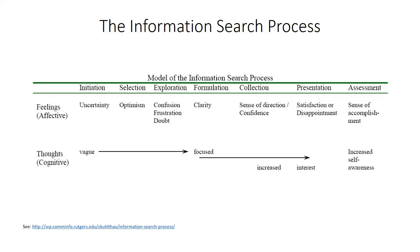The next stage is formulation, when confidence starts to increase because the student has formulated a focused perspective or argument for their research. The following stage is collection, essentially the gathering process of information — this is when students tend to get more interested and feel less uncertain. The final stage is presentation, when a student presents information they have learned to a reader or audience, and they can feel either satisfaction or disappointment depending on how well they think they did.